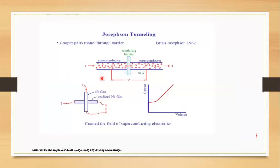Two superconductors are connected by a thin insulating material approximately 1.2 nanometers thick, and that junction is called a Josephson junction. This is the diagrammatic presentation of the Josephson junction. The remarkable point related to the Josephson junction is the weak link.